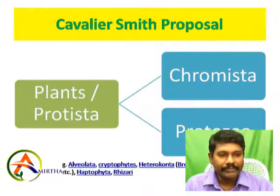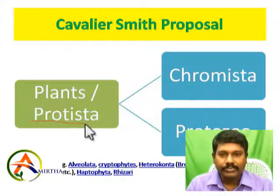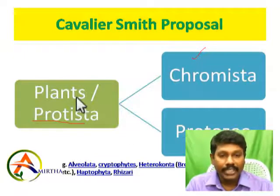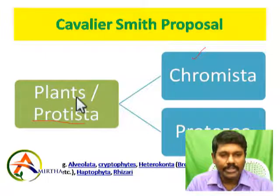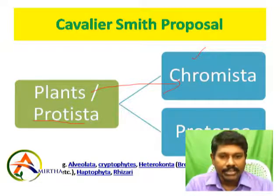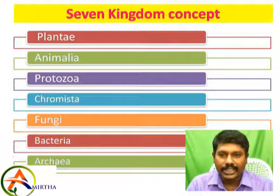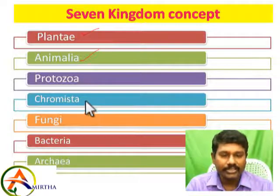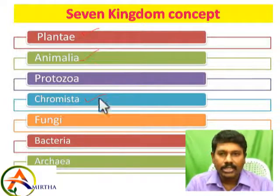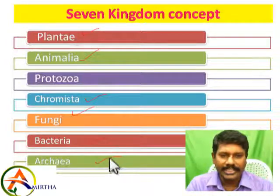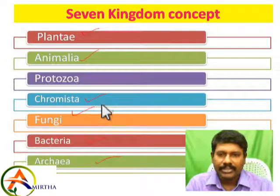So a plant with chloroplast in the endoplasmic reticulum — this is the Chromista group. If we look at this, we have seven kingdoms: Plantae, Animalia, Protista, the non-photosynthetic Chromista (split from Protista), Fungi, Bacteria, and Archaebacteria (Monera split). Chromista includes groups like Alveolata, Cryptophytes, Haptophyta, and Rhizaria. The chloroplast is not present in the cytoplasm but in the endoplasmic reticulum — that is what we call the Chromista group.